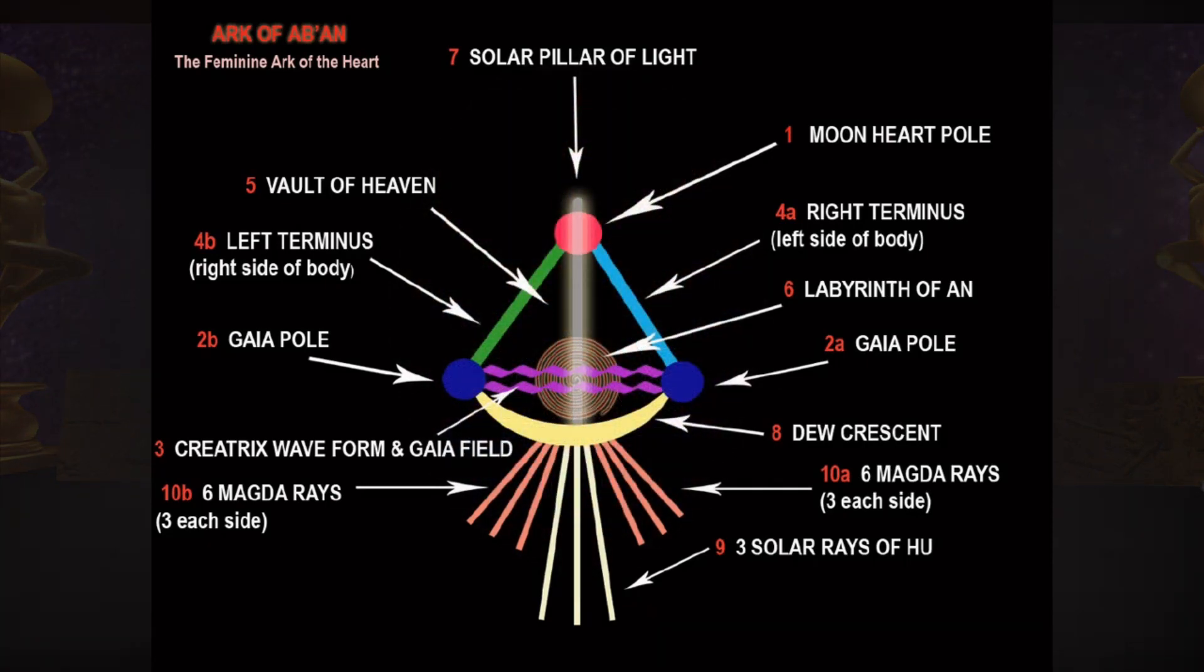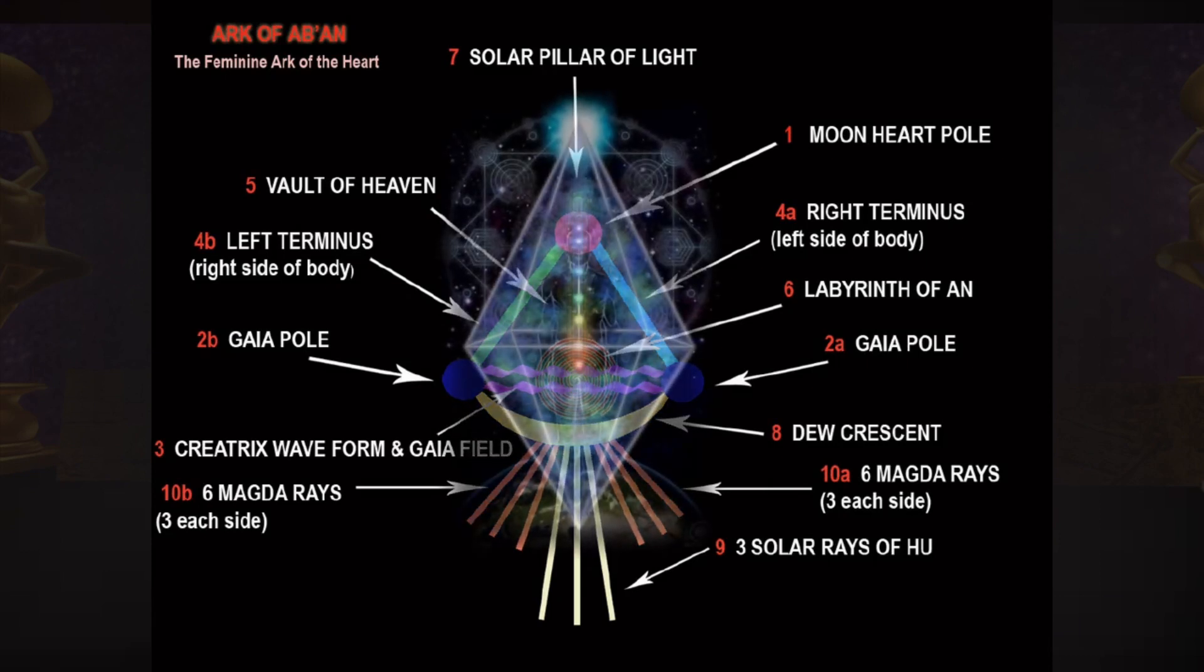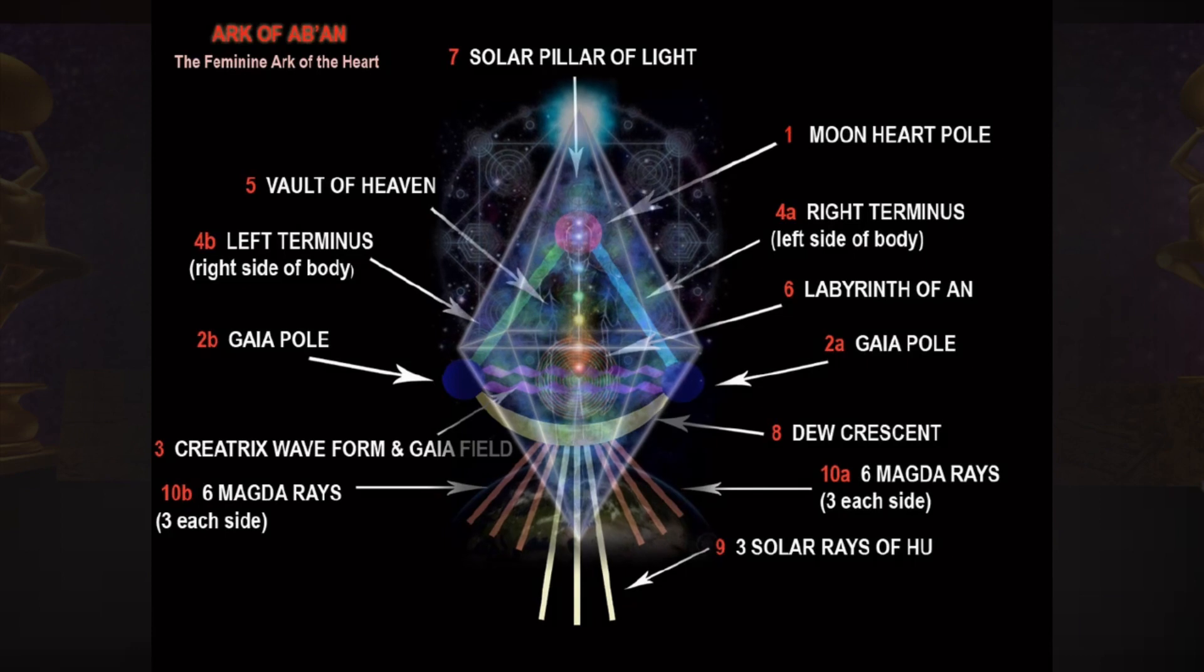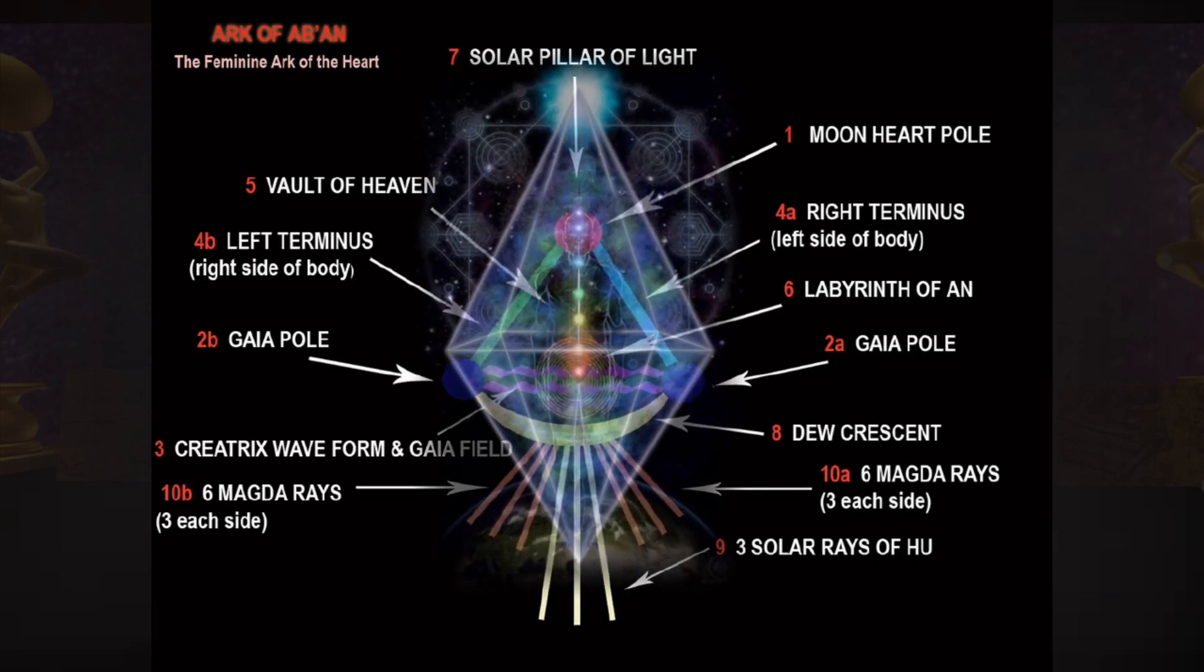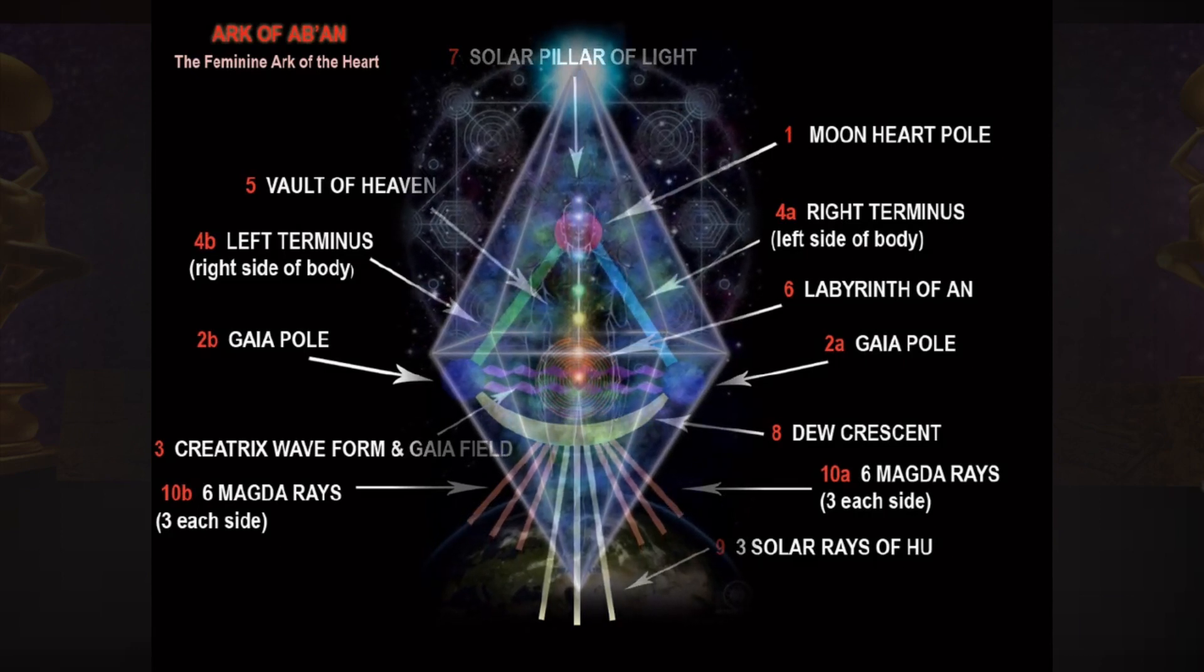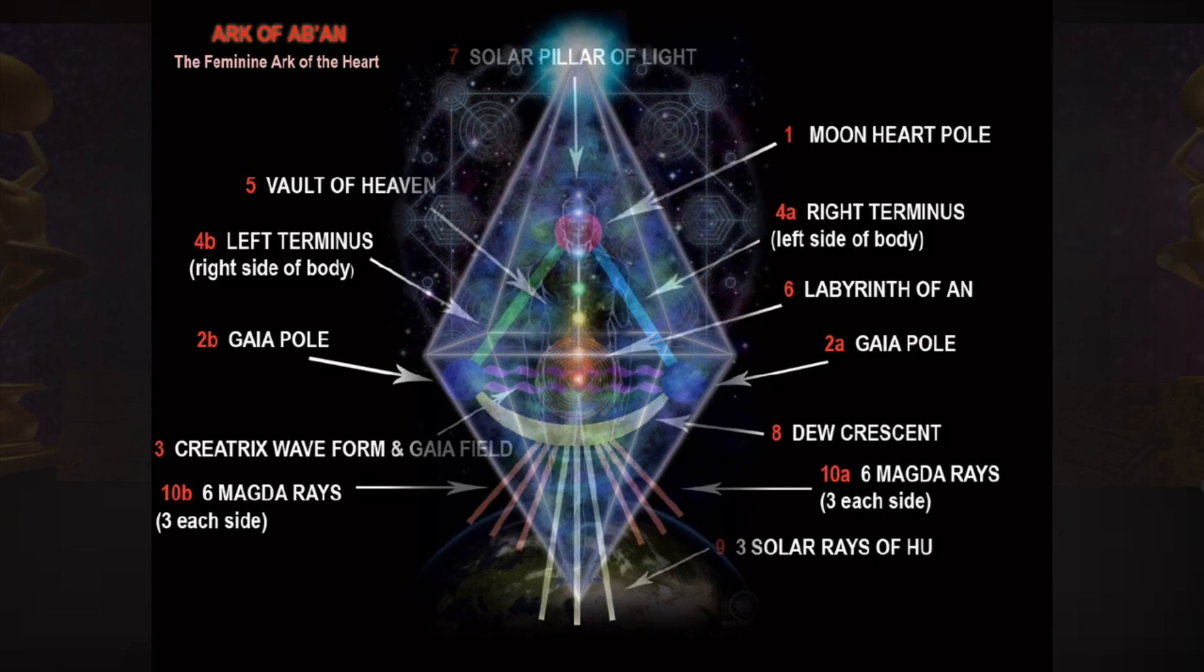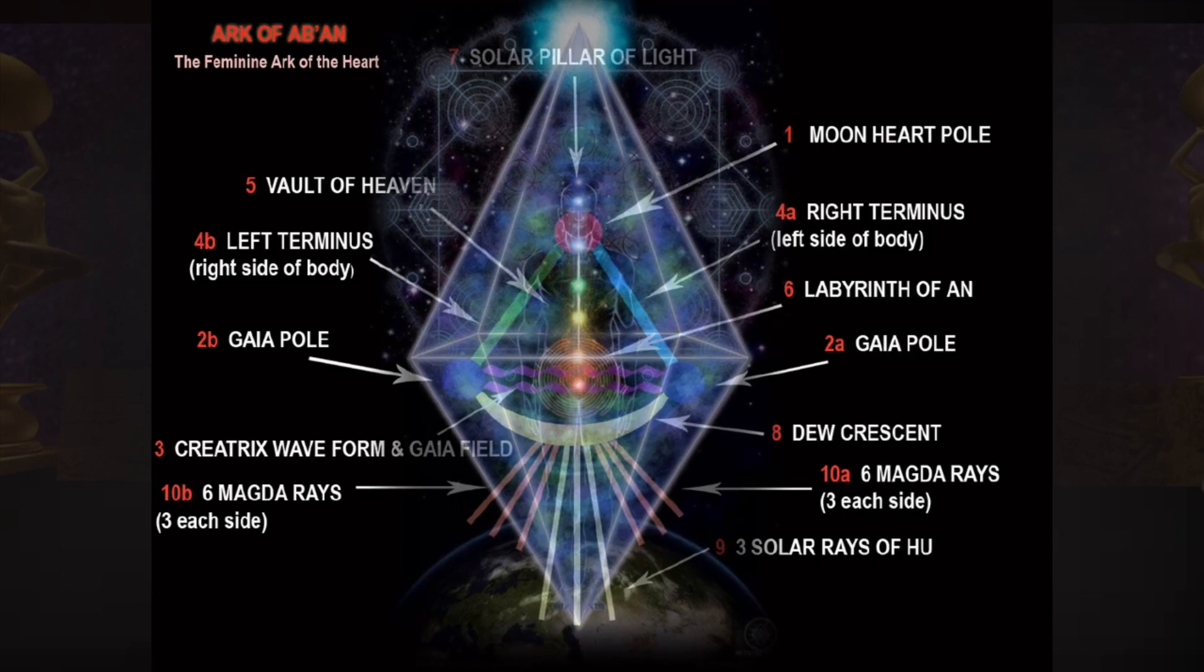The sixth node, Labyrinth of An. An means both arc and holy light, or rather light beyond the spectrum of frictional matter, what Thoth refers to as the light that does not burn. Within the spiral labyrinth of the feminine heart arc is the gestating dynamic of the Christ child, the Christic power and presence of the pure soul dynamic. This gestation is processed in continuum by the creatrix waves moving through the Gaia field.